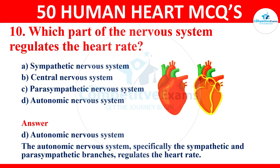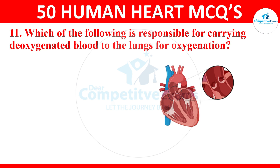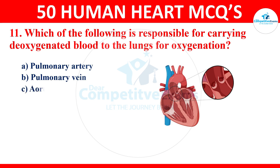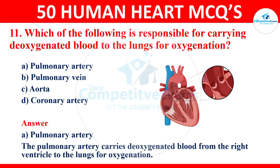Question 11: which of the following is responsible for carrying deoxygenated blood to the lungs for oxygenation? The options are pulmonary artery, pulmonary vein, aorta, or coronary artery. The pulmonary artery carries deoxygenated blood from the right ventricle to the lungs for oxygenation.